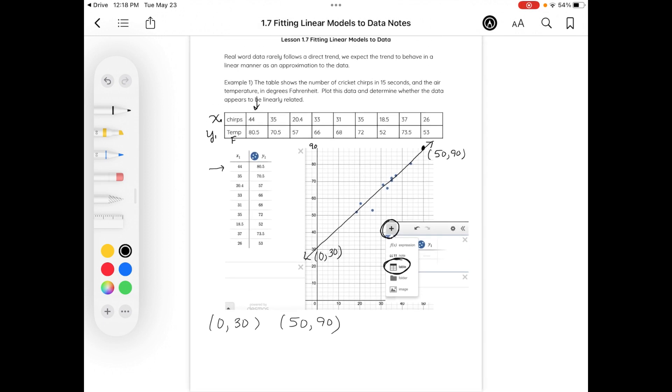We can create an equation, a linear equation, because it does appear that it is following a pretty strong linear graph here. I can find my slope by taking the difference in my y values over the difference in my x values. So this gives me 60 over 50, which is about 1.2. So that's our slope. Also, one of my points is in fact the y-intercept. Thus, y is equal to 1.2x plus 30. Let's keep this in mind for the next page of notes.